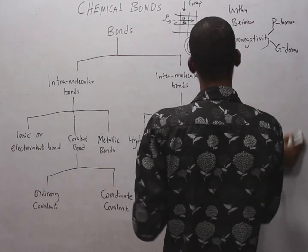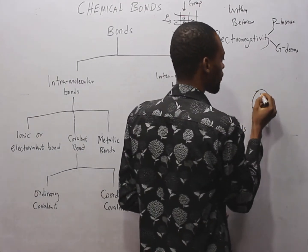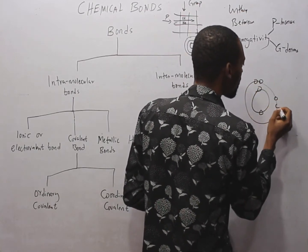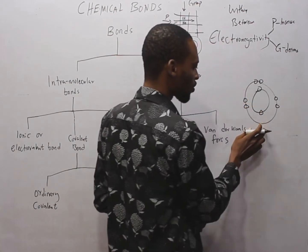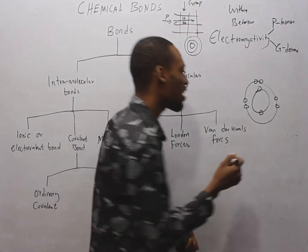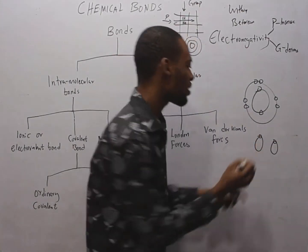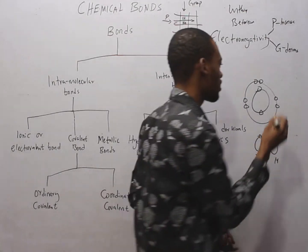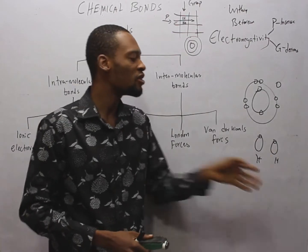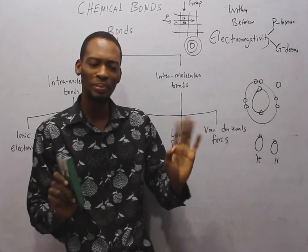Covalent bonding involves the sharing of electrons. For example, oxygen needs two electrons to complete its configuration. When we take two hydrogen atoms and one oxygen atom, oxygen approaches the two hydrogen atoms saying it needs two electrons to be complete.